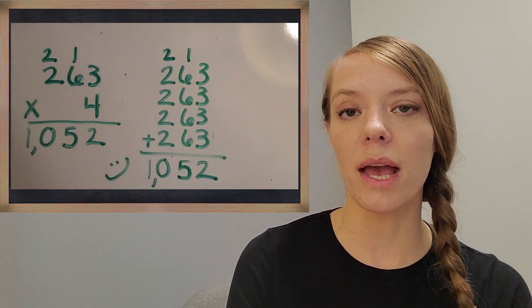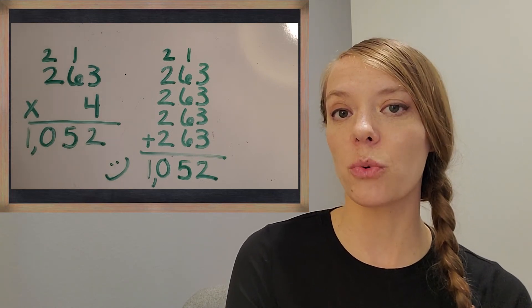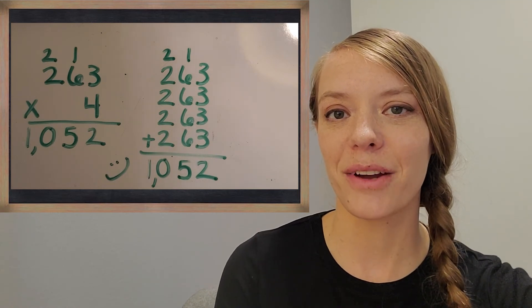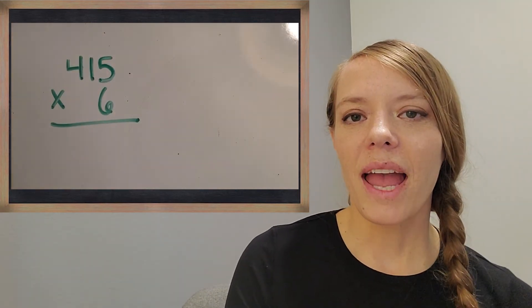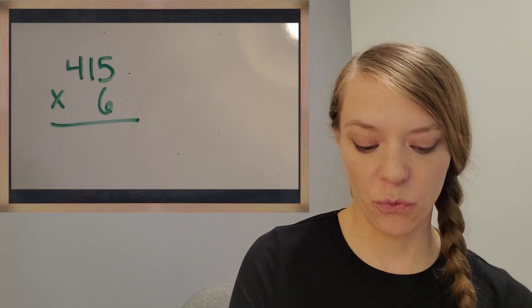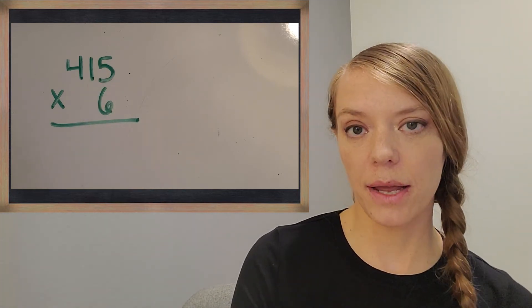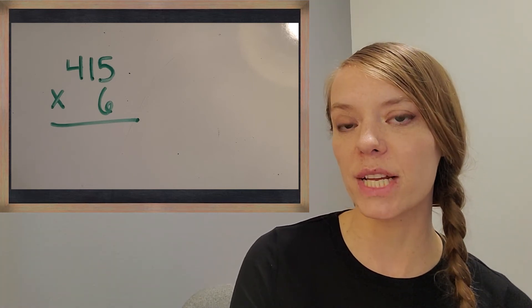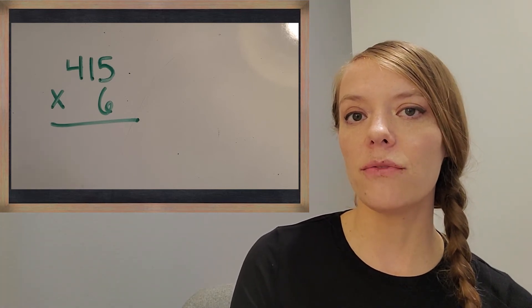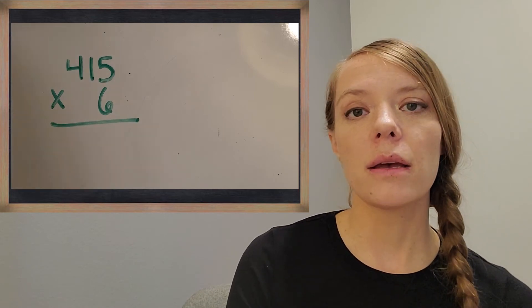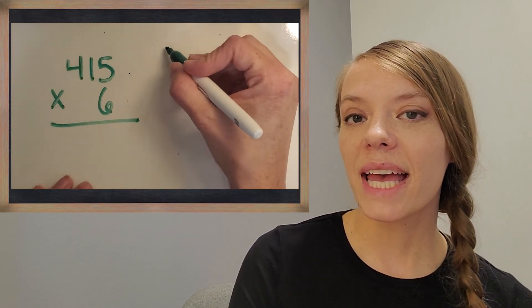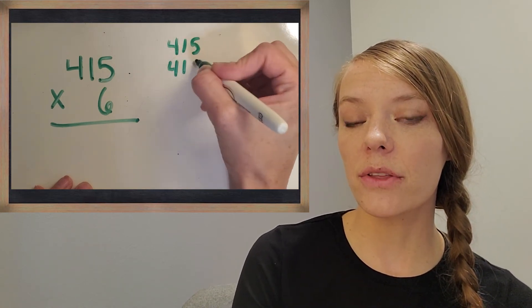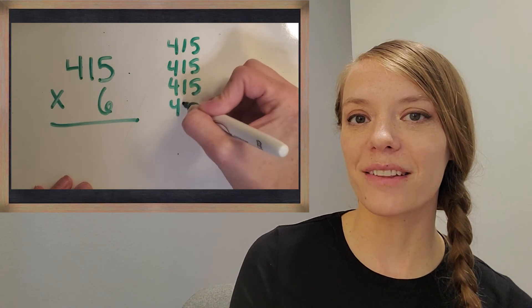I have one more problem for you to try. This is 415 times six, or you can think about it like six groups of 415. I want you to give the algorithm a try, give the repeated addition a try, and then let's see if we can get the same answer. When we come back together, we'll check your work. Good luck.